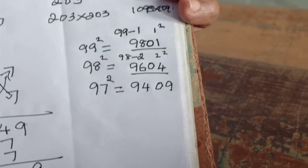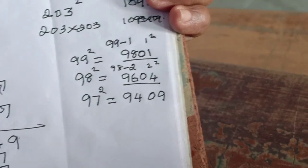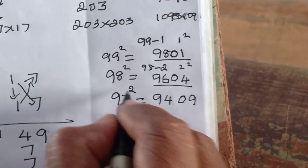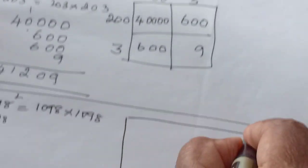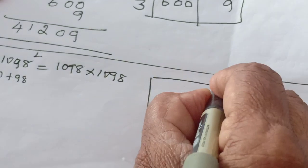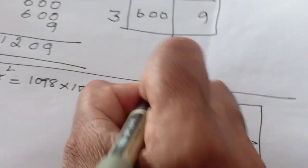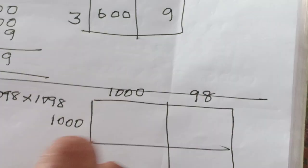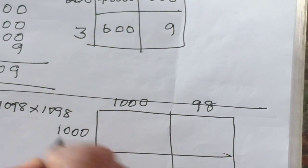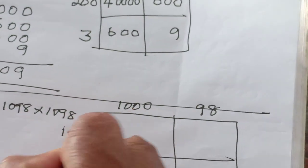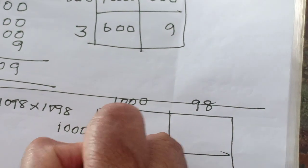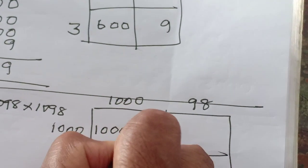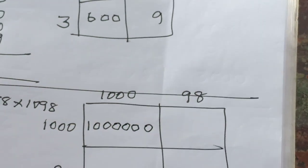So like this you can write up to 91. Up to 91 you can do the same method. Now we want this only. Here you see, how we can write? Very good. 1000 and here 98. Here 1000, here 98. So here what? 1. How many 0s? 6 0s. 1, 2, 3, 4, 5, 6.